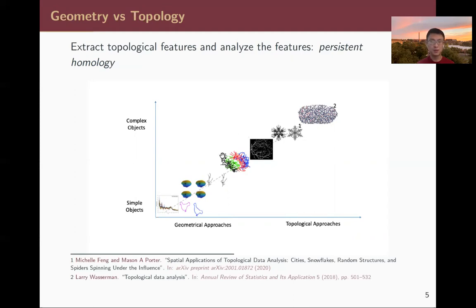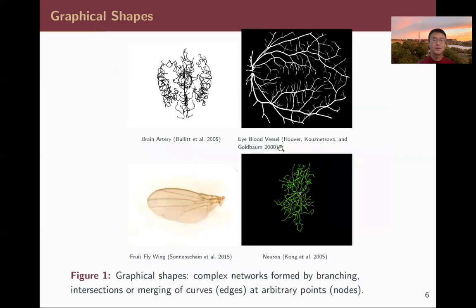Today I'm going to talk about how, for relatively structured and relatively complex objects, we can study their shape in a geometrical way. More specifically, I'm focused on graphical shapes — examples include brain arteries, eye blood vessels, fruit fly veins, and neurons. A graphical shape is made up of nodes and edges: nodes are either junction or terminal nodes, and edges represent the shape of the 2D or 3D curves between them.